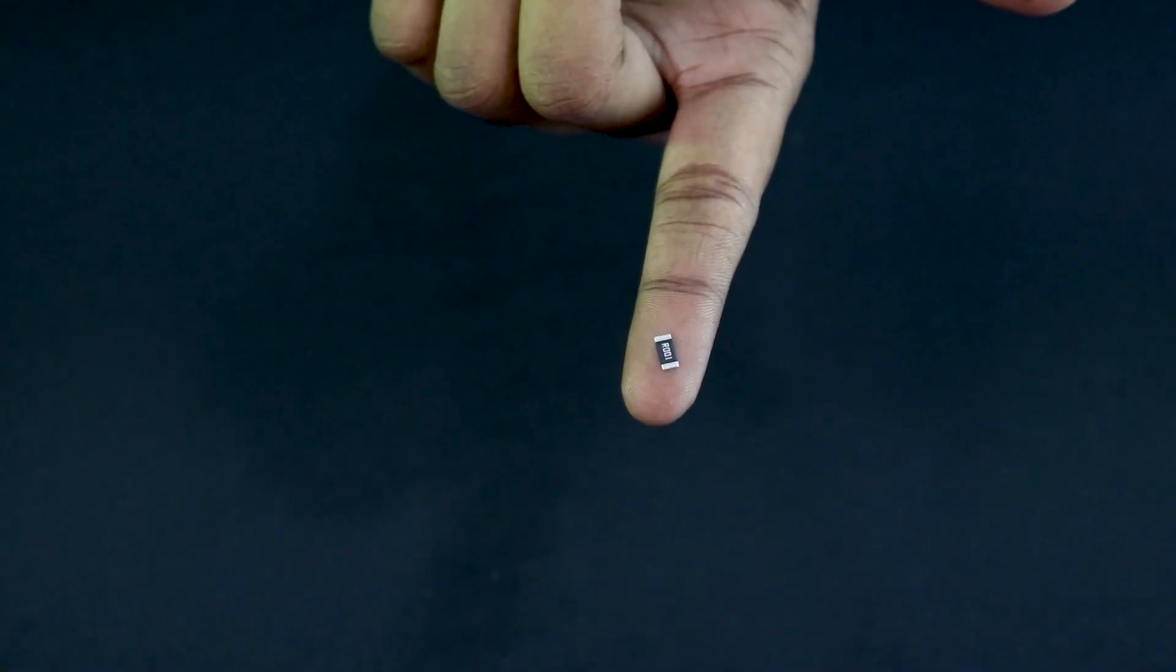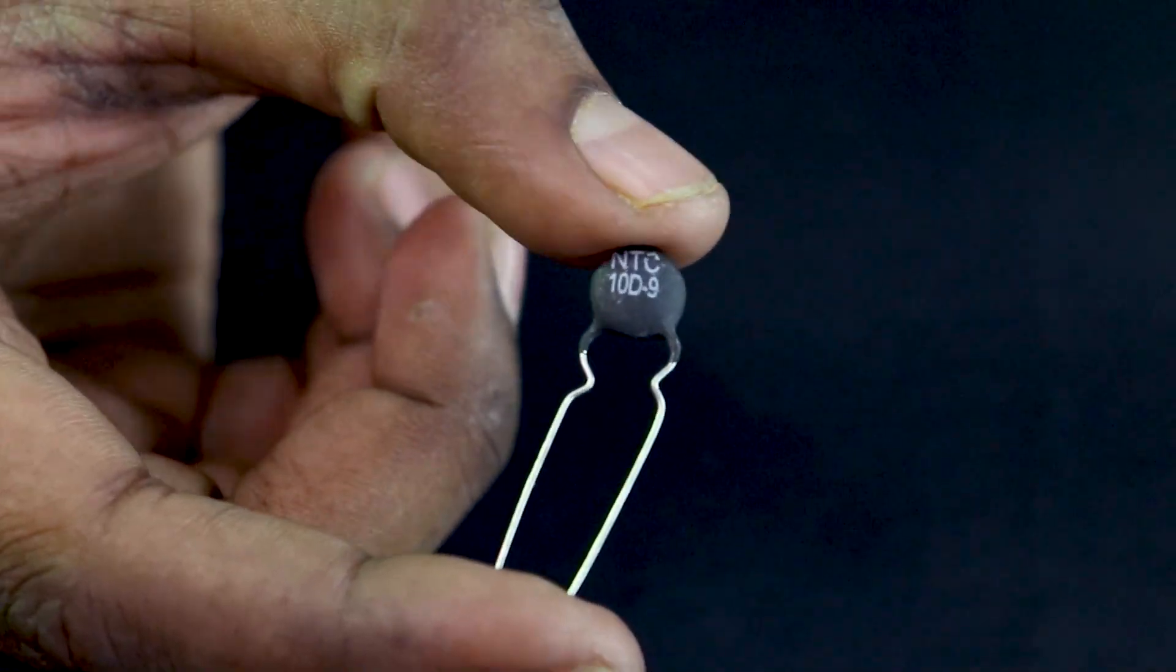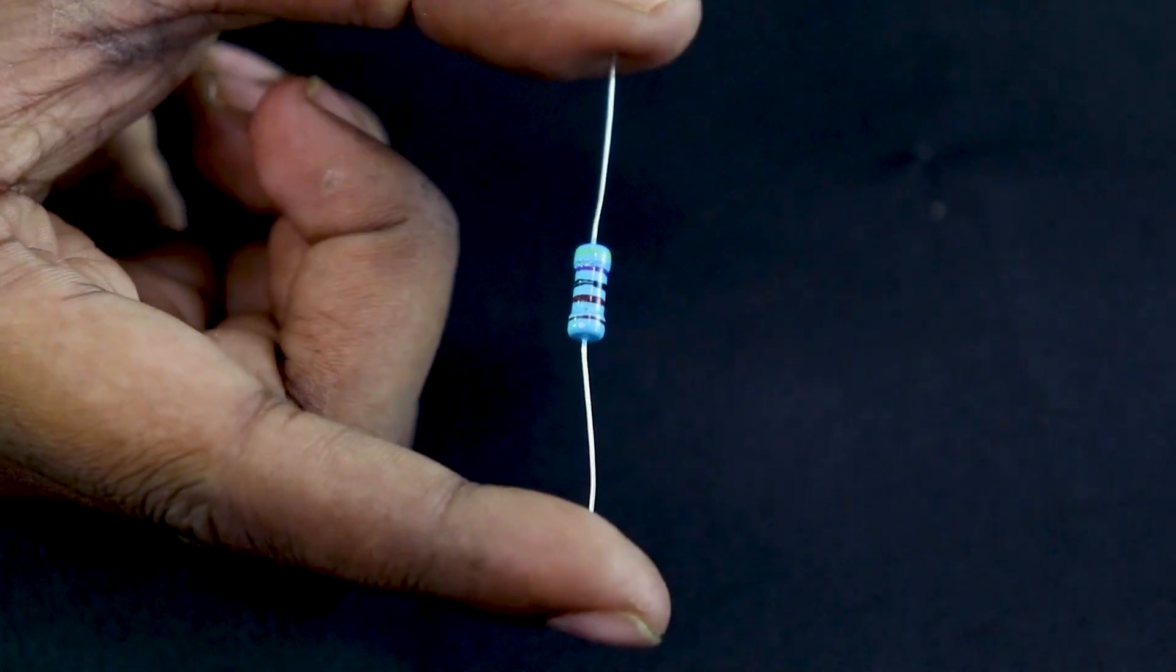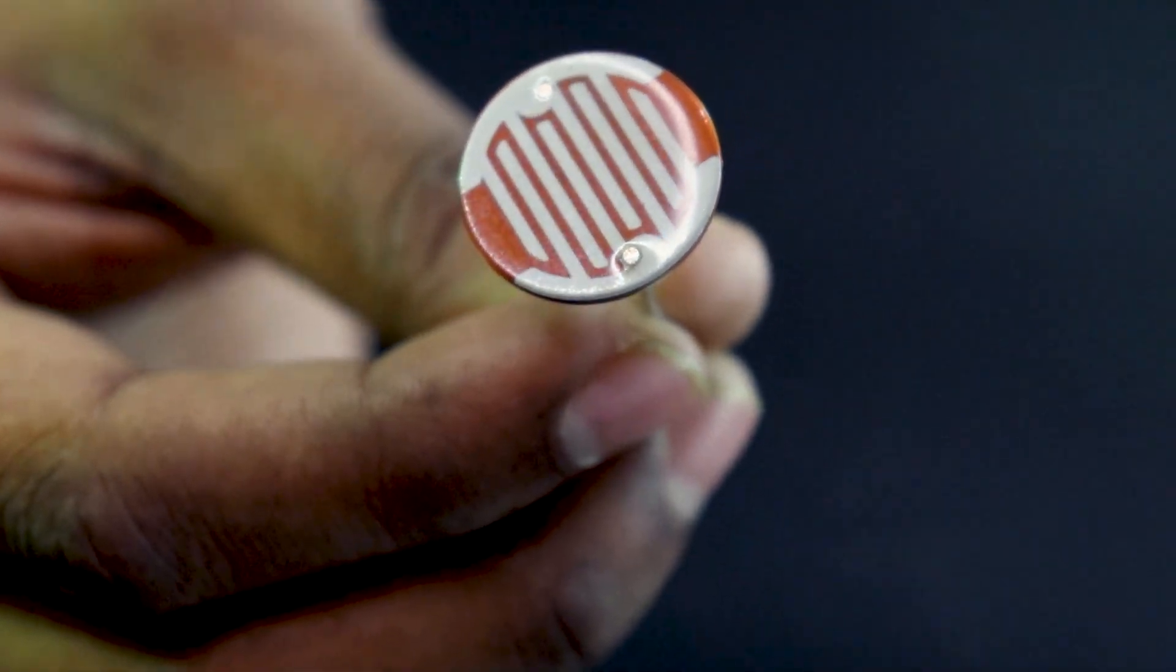Resistors are one of the most primary components while making any electronic circuit or device. Resistors are basically passive electronic components that resist the flow of electric current through them. Resistors are also used to divide voltage, terminate transmission lines, adjust signals, etc. In this video we'll learn what are the different types of resistors and how you can choose one for your project.